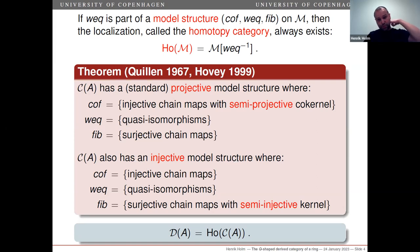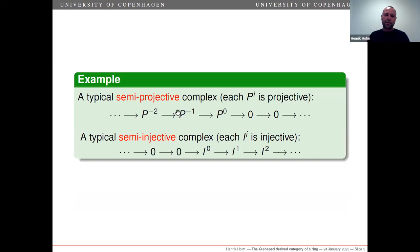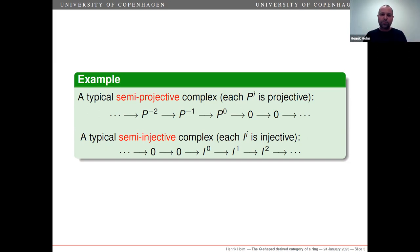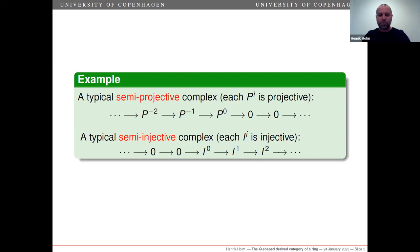If you look at any complex bounded to the right and consisting of projective modules, that will always be a semi-projective complex. For unbounded complexes of projective modules, it may or may not be semi-projective, so for unbounded complexes it's a little bit more tricky. Dually, if you have a complex which is bounded to the left and consists of injective modules, that will be a typical example of a semi-injective complex.